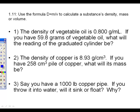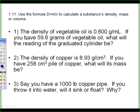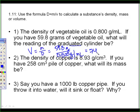Got some density problems last but not least. For the first one, it needs the reading of the graduated cylinder. That's volume. If you use your correct volume formula, that's V equals M over D. So you should get 59.8 grams over 0.800 grams per milliliter. If you punch that into your calculator, you get 74.75 milliliters.